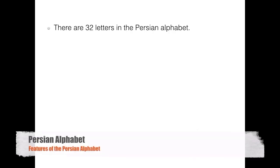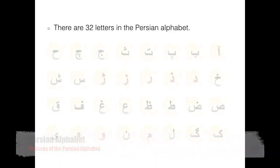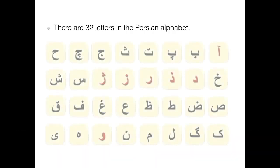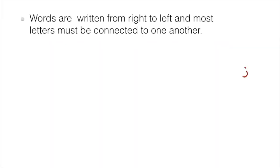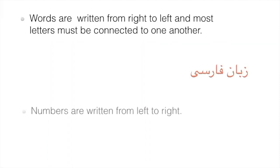There are 32 letters in the Persian alphabet. Words are written from right to left and most letters must be connected to one another. Numbers are written from left to right.